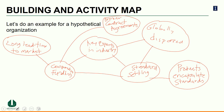The idea behind this activity map is to first map out the core value proposition elements — in this case, key experts, cooperative funding, and standard setting — and then identify other activities the organization engages in to deliver on that value proposition: long lead time to market, broker contract agreements, being globally dispersed, and products encapsulating standards. You then connect those elements and also examine how the activities themselves relate to each other. For example, long lead time to market might connect to the fact that those products encapsulate standards.